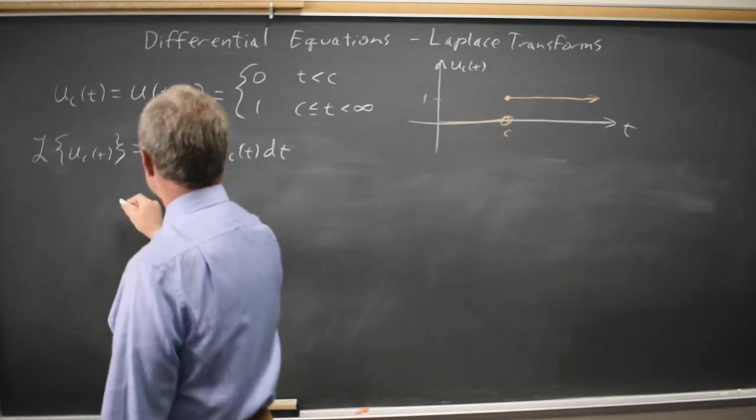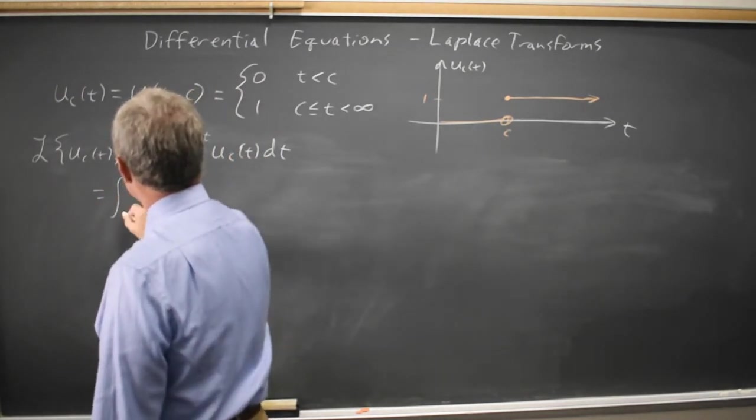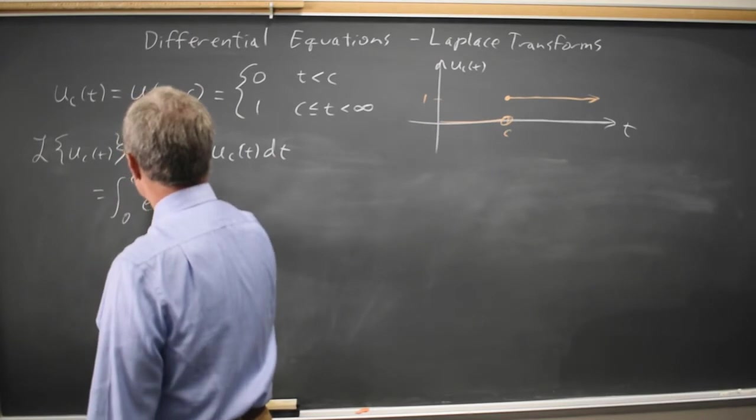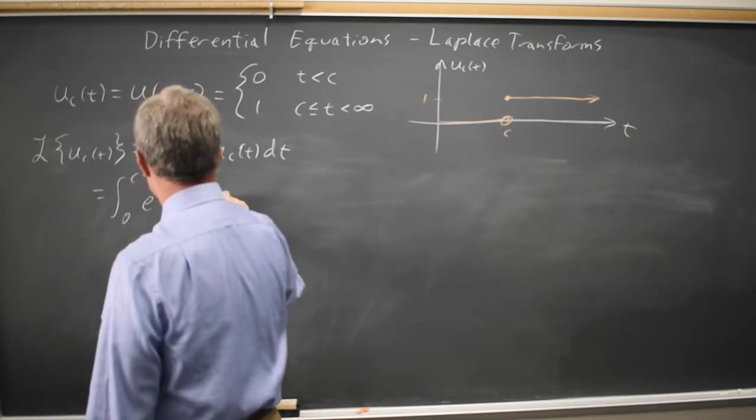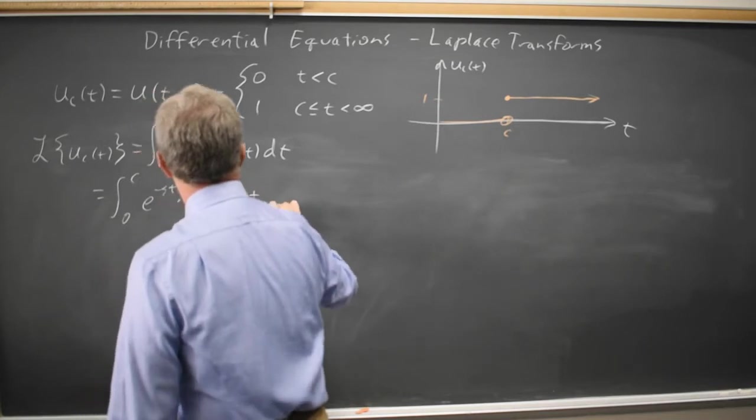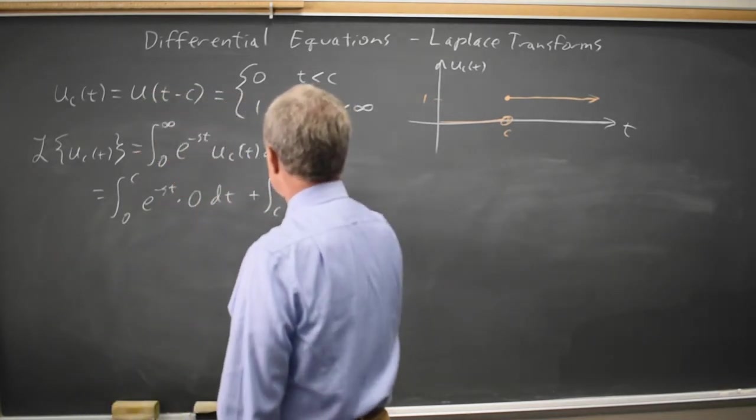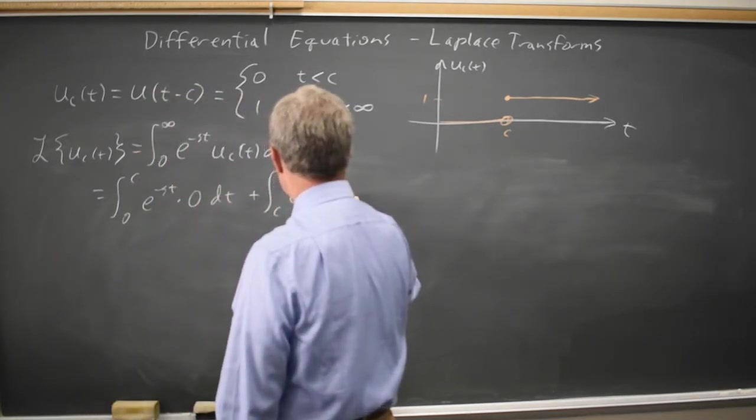And since this is a piecewise function, I can integrate from zero to c, e to the negative st, times the first piece, which is zero, plus the integral from c to infinity, e to the negative st, times the second piece, which is one.